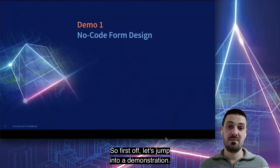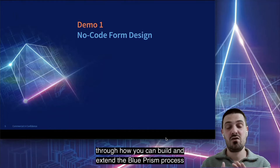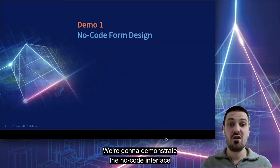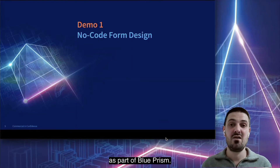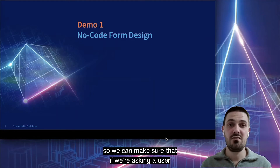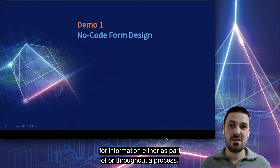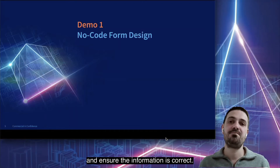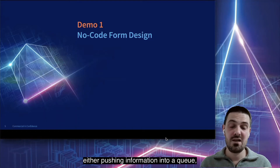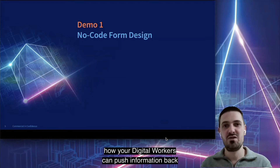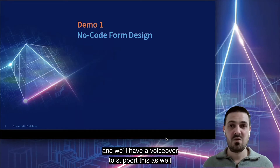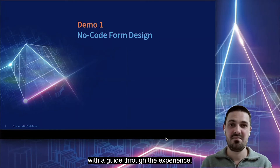Let's jump into a demonstration. We're going to be taking you through how you can build and extend a Blue Prism process using Blue Prism Interact. We're going to demonstrate the no-code interface and how easy it is to use Interact as part of Blue Prism. We'll show things like field-level validation, how we can publish forms, and drive the integration into Blue Prism — either pushing information into a queue or how digital workers can push information back to Interact. I'm going to hand over to Adrian who's going to help with the demonstration.